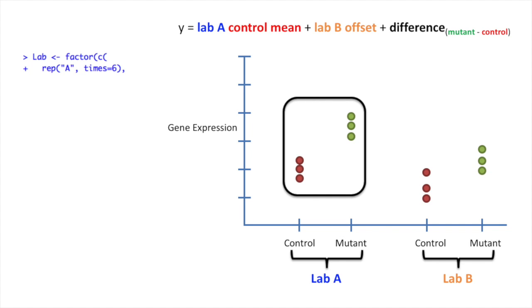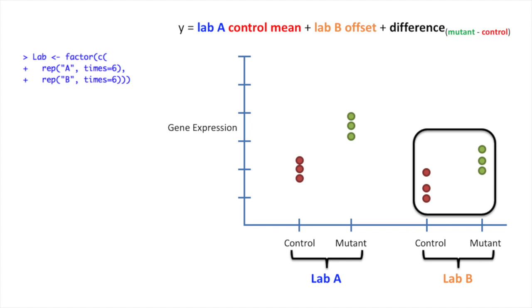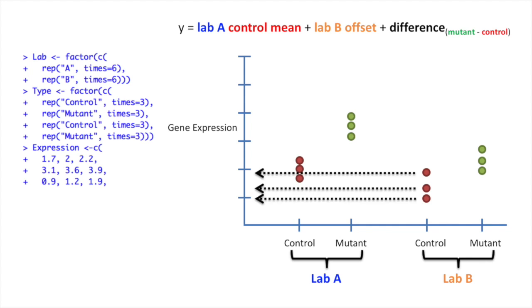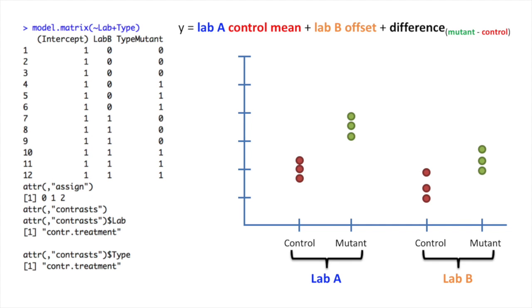In R, we start by creating the labels for the data that was generated by lab A. Then we create the labels for the data that was generated by lab B. Then we create the labels for the control data from lab A and the mutant data from lab A. Then we create the labels for the control data from lab B and the mutant data from lab B. Then we enter in all of the expression values. Then, if we wanted to, we could call model.matrix to see what the design matrix looked like.